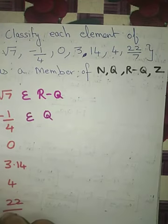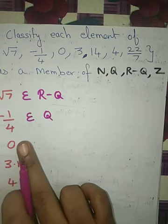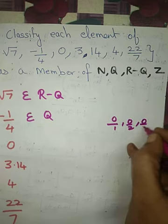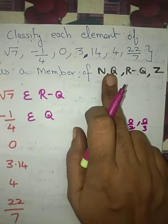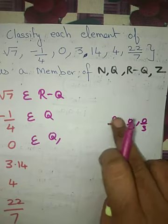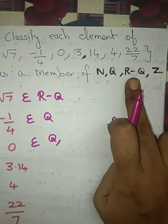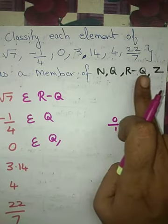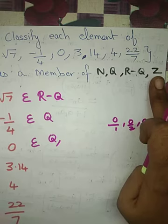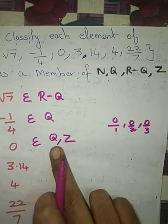Now consider 0. Is it a natural number? No — natural numbers begin with 1. Is it a rational number? Yes — 0 can be written as 0 by 1 or 0 by 2, since the numerator can be 0 in a rational number as long as the denominator is not 0. Is it irrational? No, there is no root symbol. Is it an integer? Yes — integers include positive numbers, negative numbers, and 0. So 0 belongs to both Q and Z.